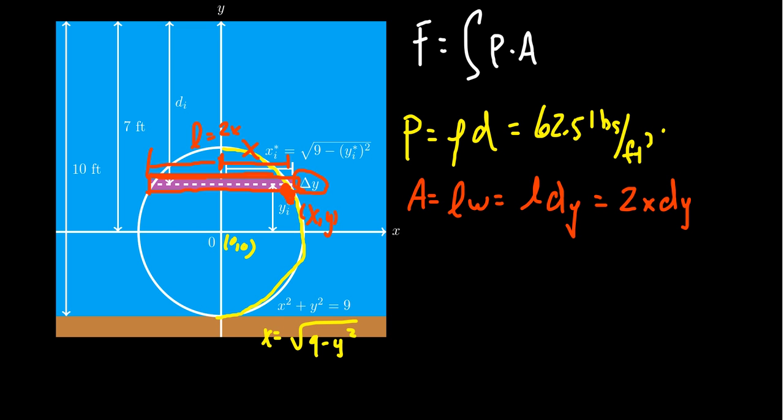Since we have to integrate with respect to y, we have to write x in terms of y. That's why this observation is critical. We're going to get that the area is going to equal 2 times the square root of 9 minus y squared dy.